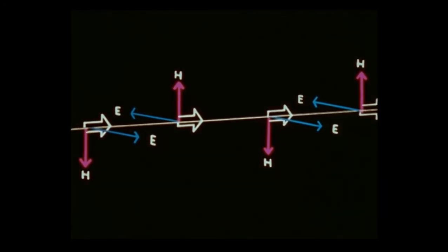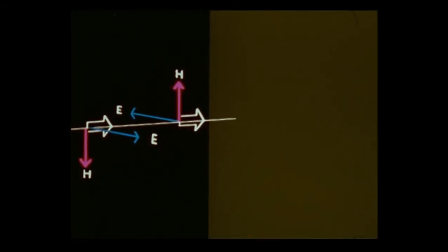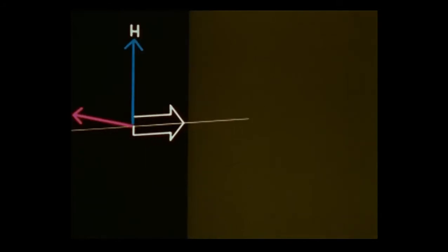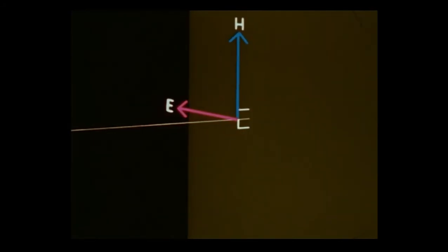Let us now consider what happens when the wave strikes a reflecting surface. We will consider only one pair of the peak vectors. As before, Poynting's rule gives the direction of propagation. On reaching the reflector, the E field is reversed, but the direction of the H field is unchanged.